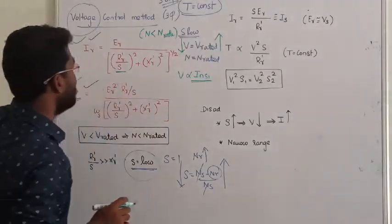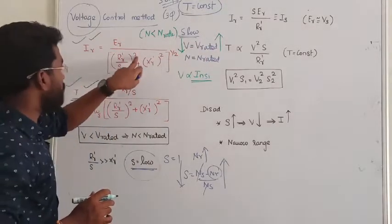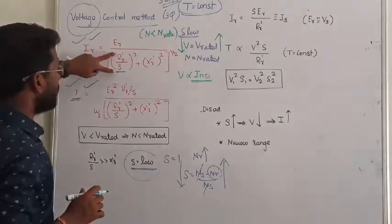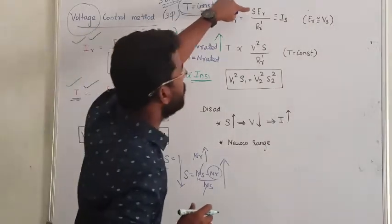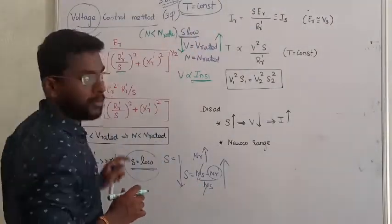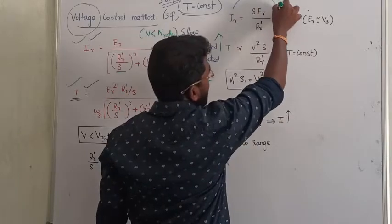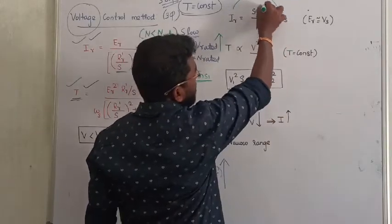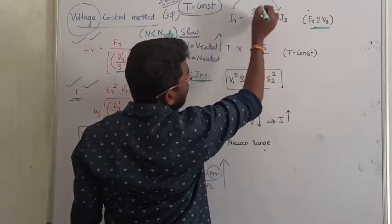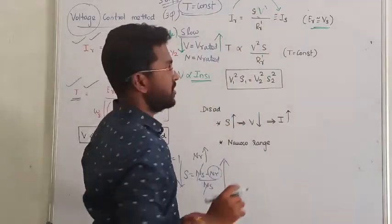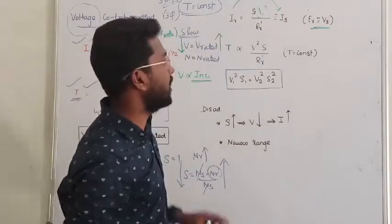With rotor reactance neglected, the approximate rotor current equation becomes: I₂ ≈ S·E / (R'/S) = S·E·S / R' = S²·E / R'. Simplifying, the denominator reduces and we get rotor current approximately equal to S·V / R', where E (rotor EMF) is approximately equal to the supply voltage V.